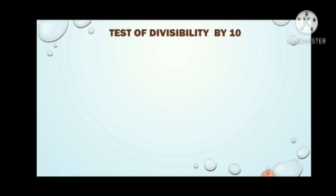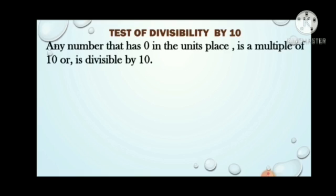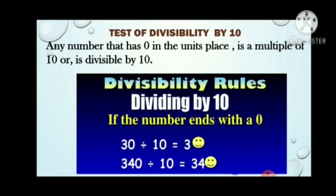Test of divisibility by 10. Any number that has 0 in the unit's place is a multiple of 10 or is divisible by 10. Now here we have to see the unit's place — 0. If a number has 0 in its unit's place, then it is divisible by 10. It is also divisible by 2 and 5, as we saw in the tests of 2 and 5 previously.